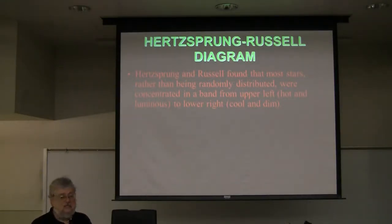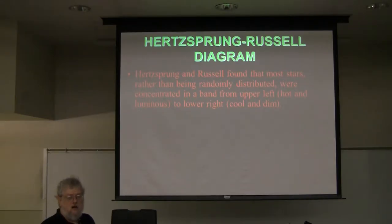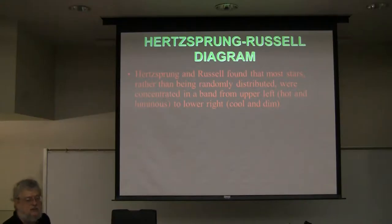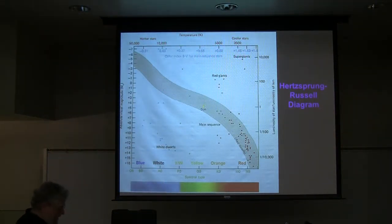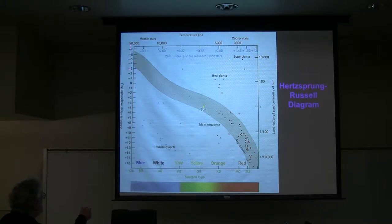They found that they didn't get a random distribution — there was some order to it. Most stars that they plotted fell along a line from upper left to lower right: a broad band from upper left where the hot and luminous ones are, down to the lower right where the cooler and dimmer ones are. This is what they referred to as the main sequence along the HR diagram, with luminosity on one axis and color and spectral type on the other.